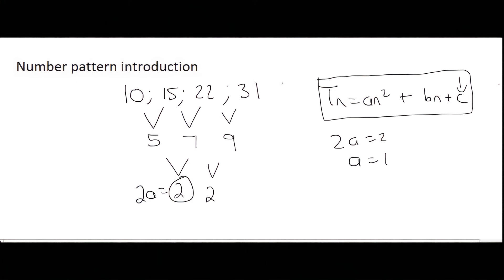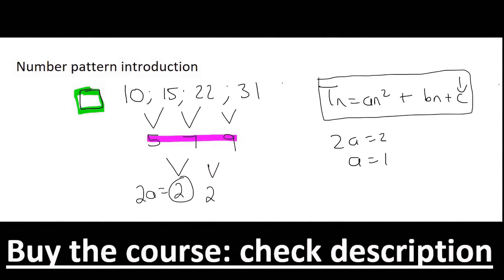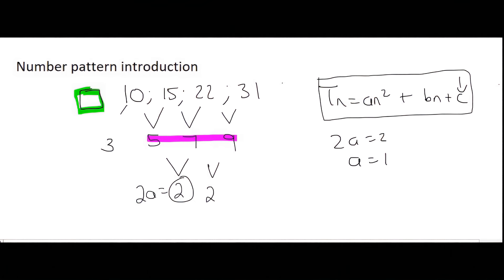Here's where it becomes different. The next thing we find is C. We work out what term 0 would be by looking at the second difference pattern — it goes 9, 7, 5, so the next value going back would be 3. What number would we need so that adding 3 gives 10? That would be 7. So C = 7.